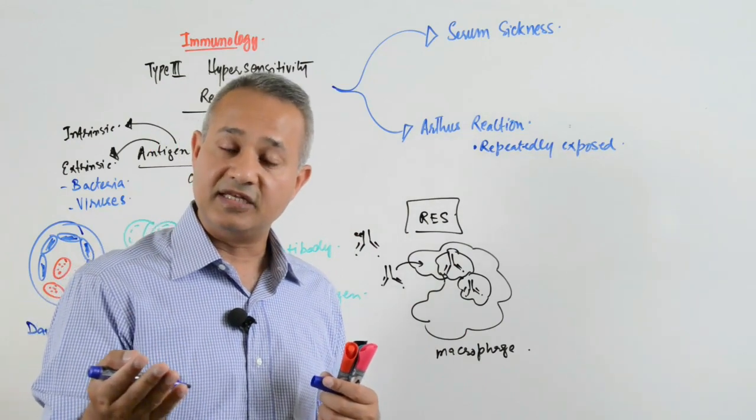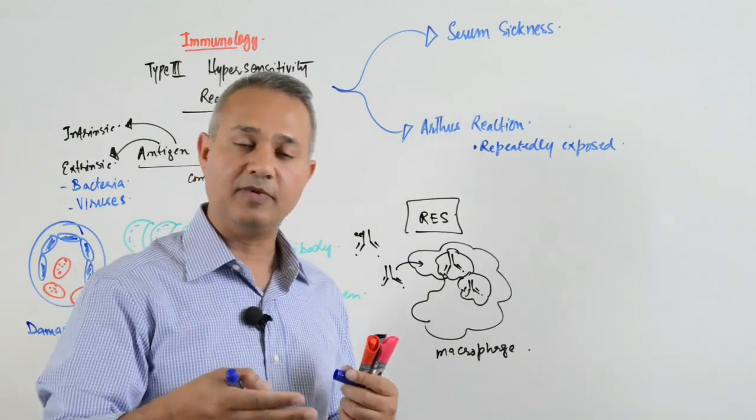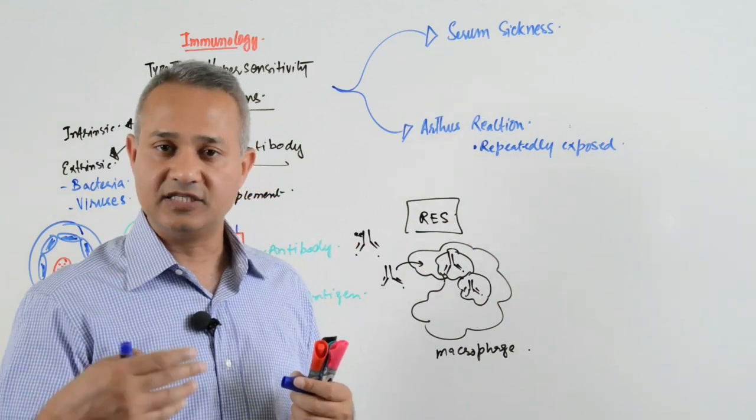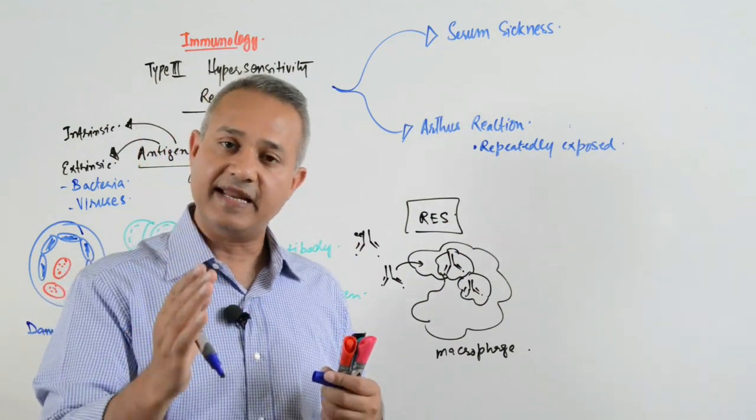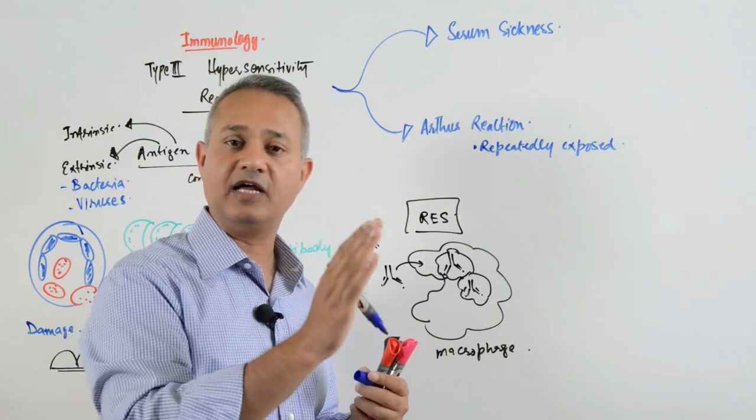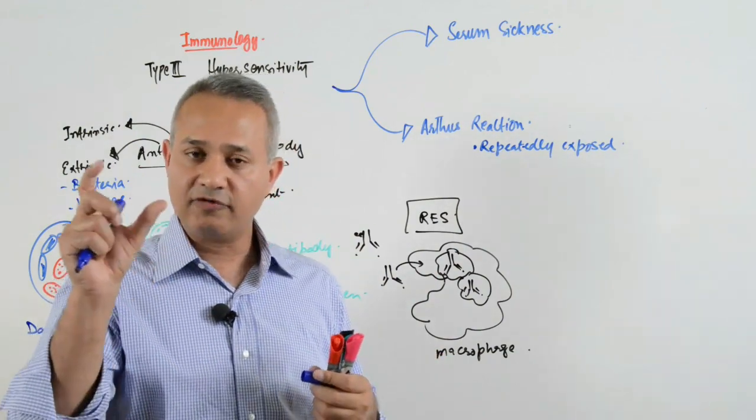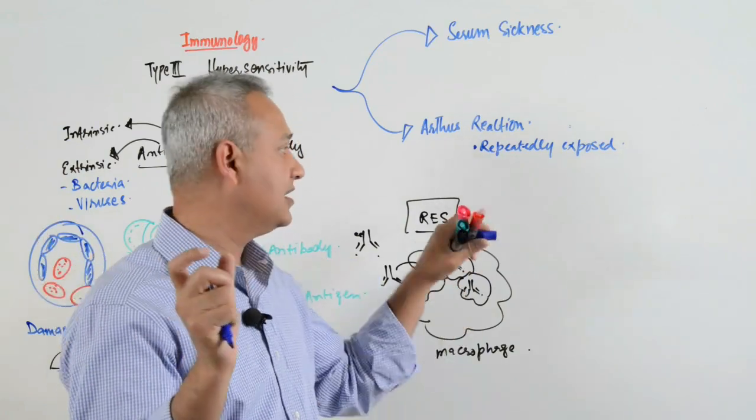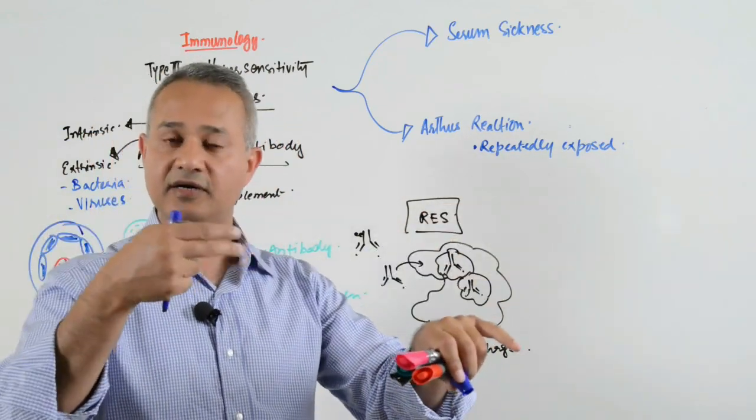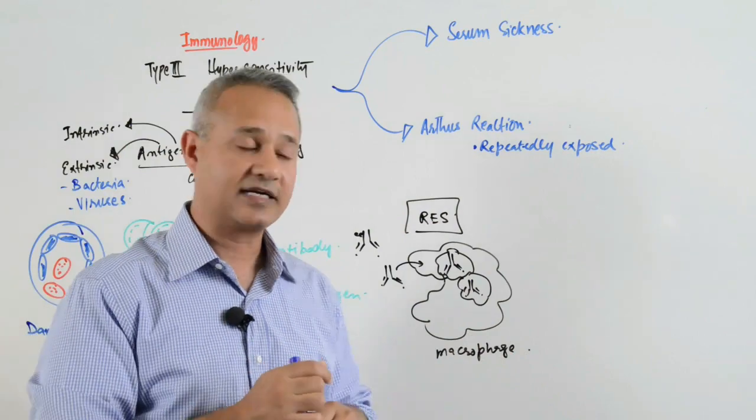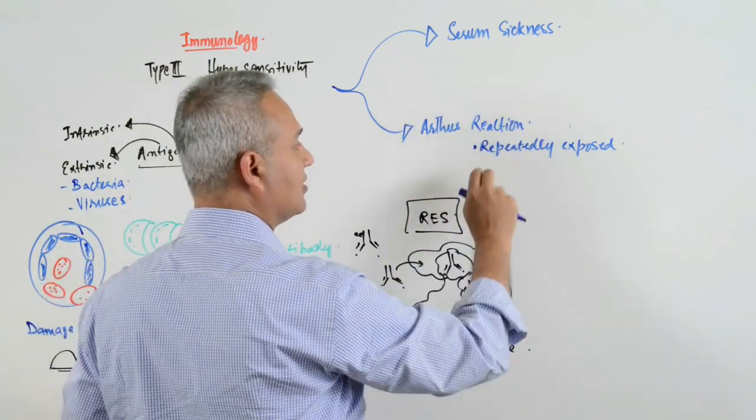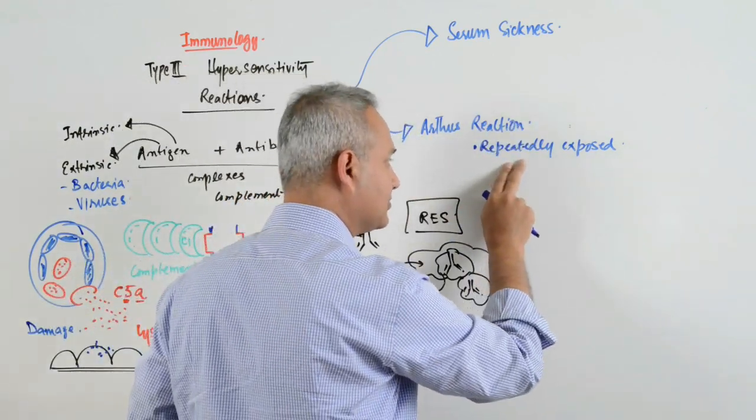There is an induced example as well. For example, tetanus injection, if that is given the next booster dose is to be given after five years. If the next dose is given before five years, we already have the antigens and then more antigens. Antibodies are already present and more antigens are injected. In all those cases there needs to be repeated exposure.